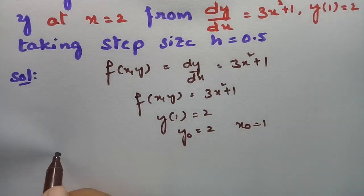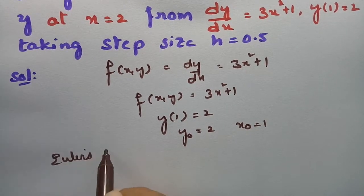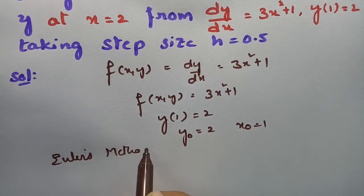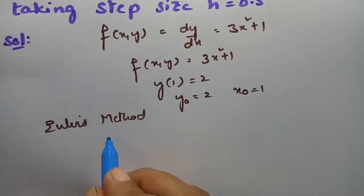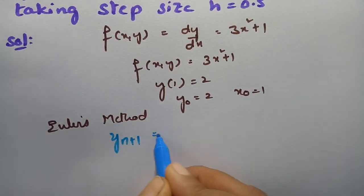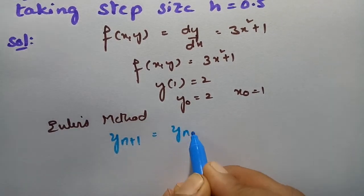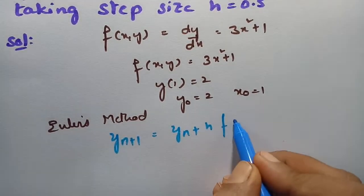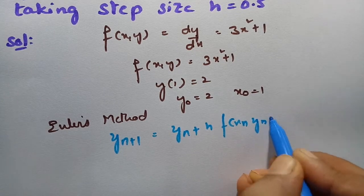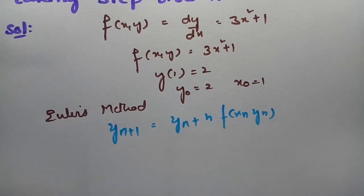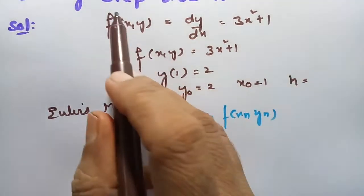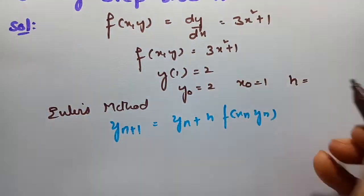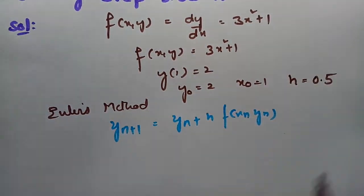According to Euler's method, we have to use the formula: y(n+1) = yn + h·f(xn, yn). The step size value is given as h = 0.5.